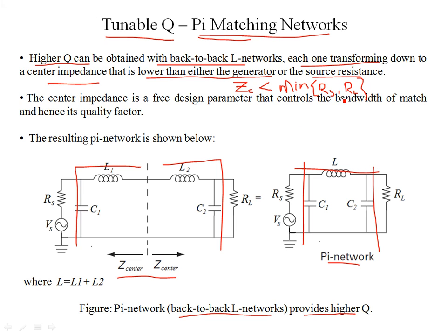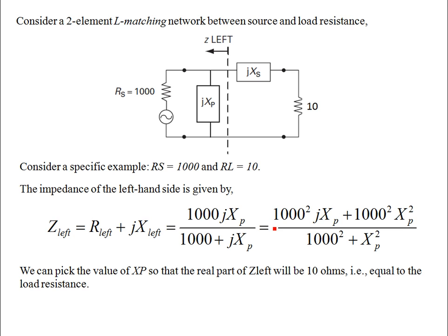Keep in mind that the central impedance must be less than the minimum of source and load resistance. For example, if the source is 1000Ω and the load is 100Ω, keep Z_center below 100Ω. This is a free design parameter that controls the bandwidth. An L network transforms the load impedance — it's an inverted L with one reactive element in shunt and one in series.